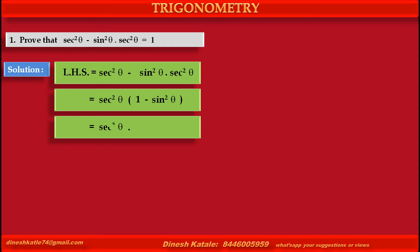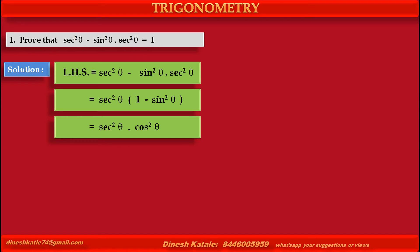1 minus sin squared theta becomes cos squared theta. Therefore it is equal to sec squared theta into cos squared theta. Since sec theta and cos theta are reciprocals of each other, the product of sec squared theta into cos squared theta is 1, which is equal to the right hand side.